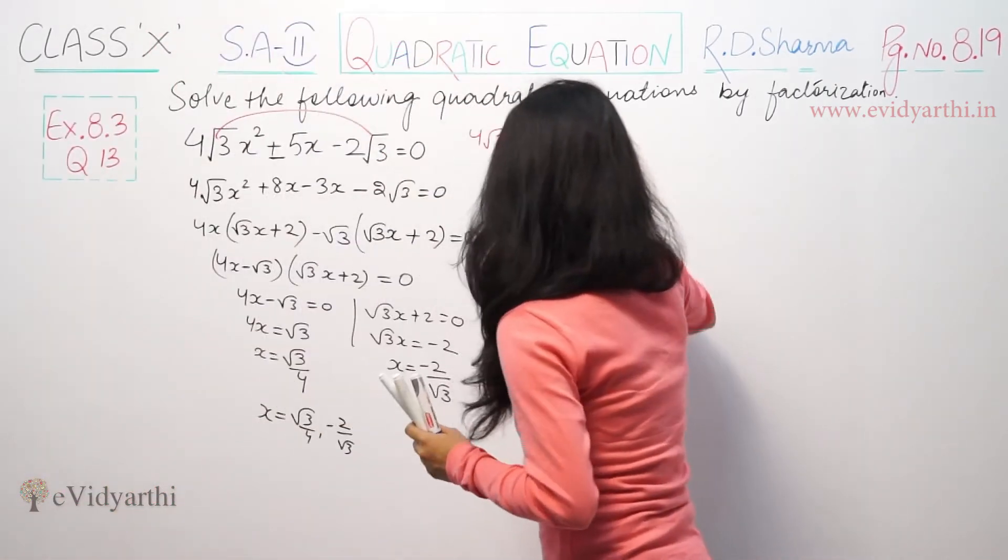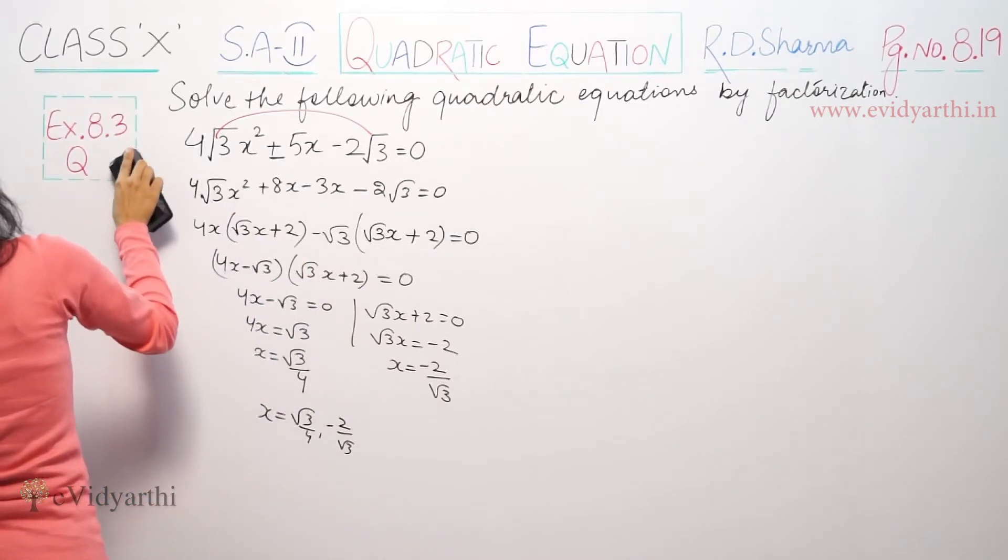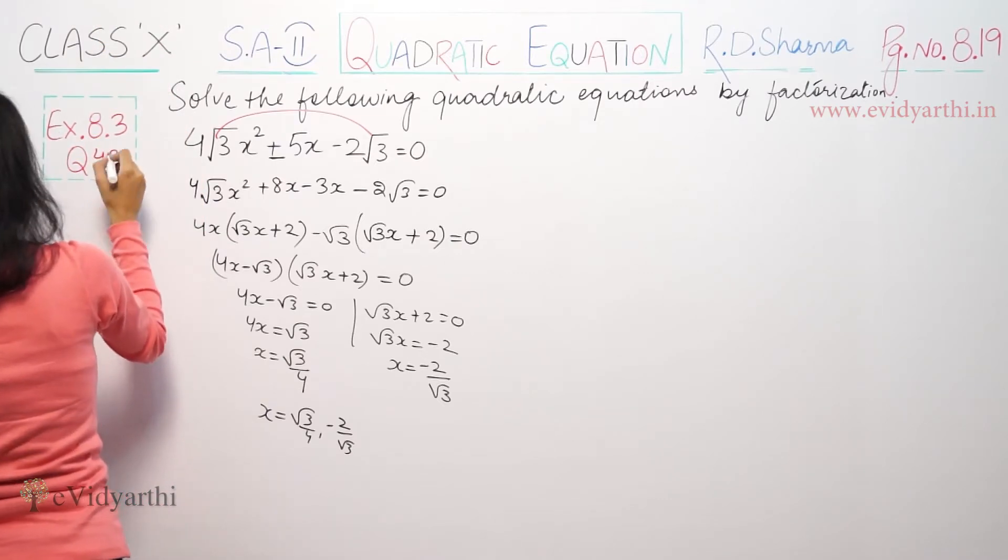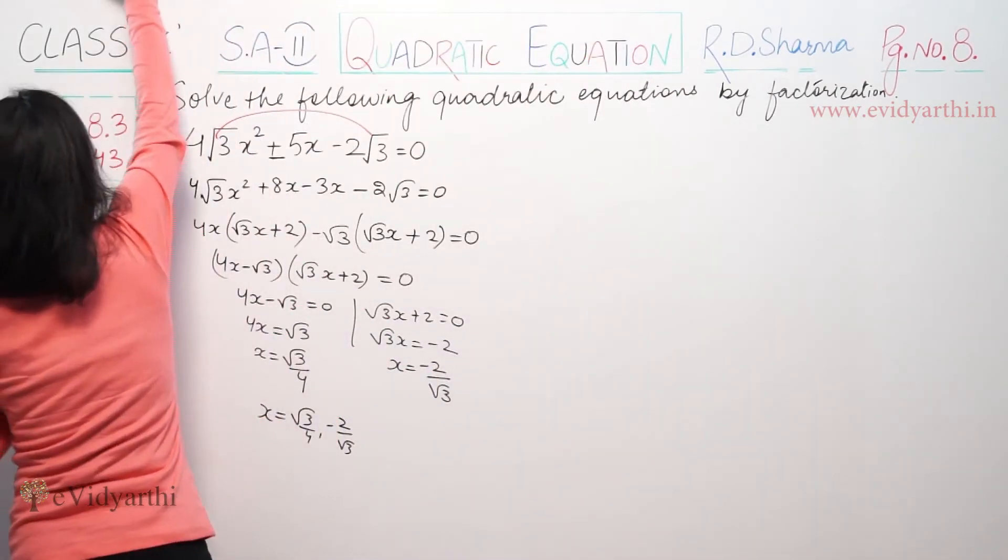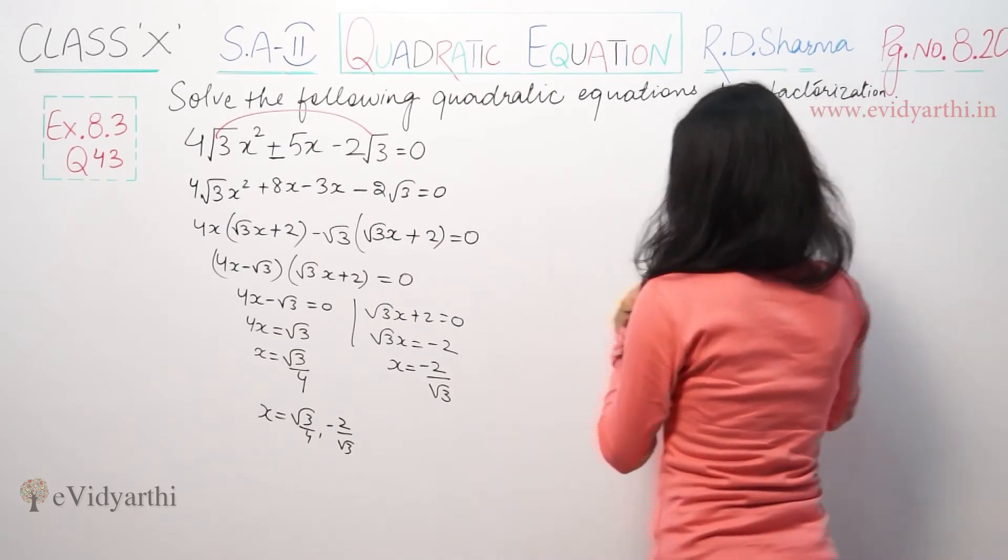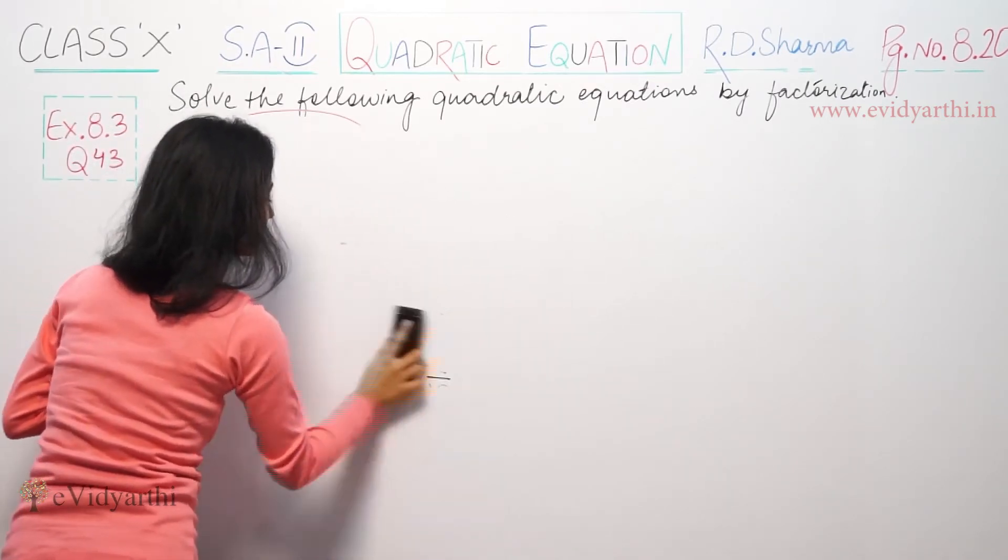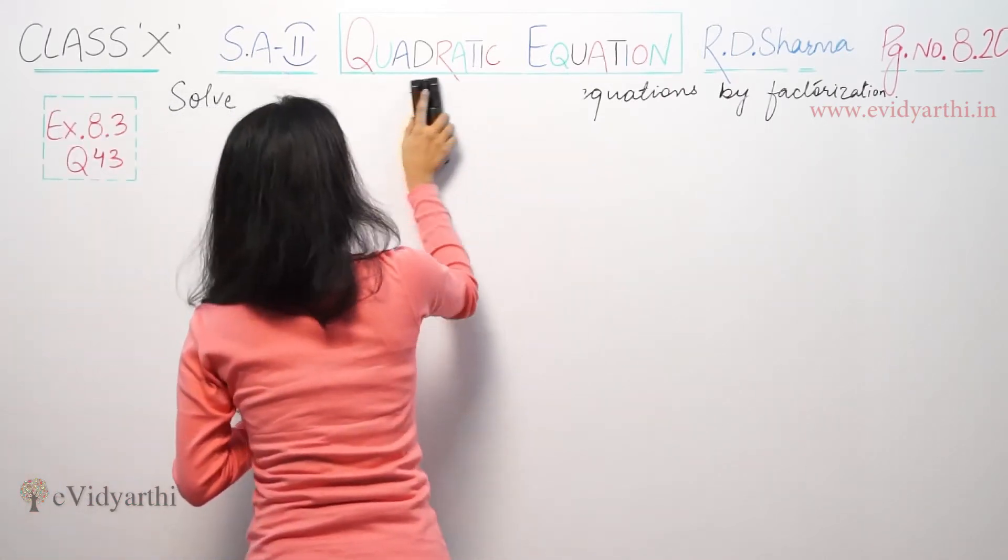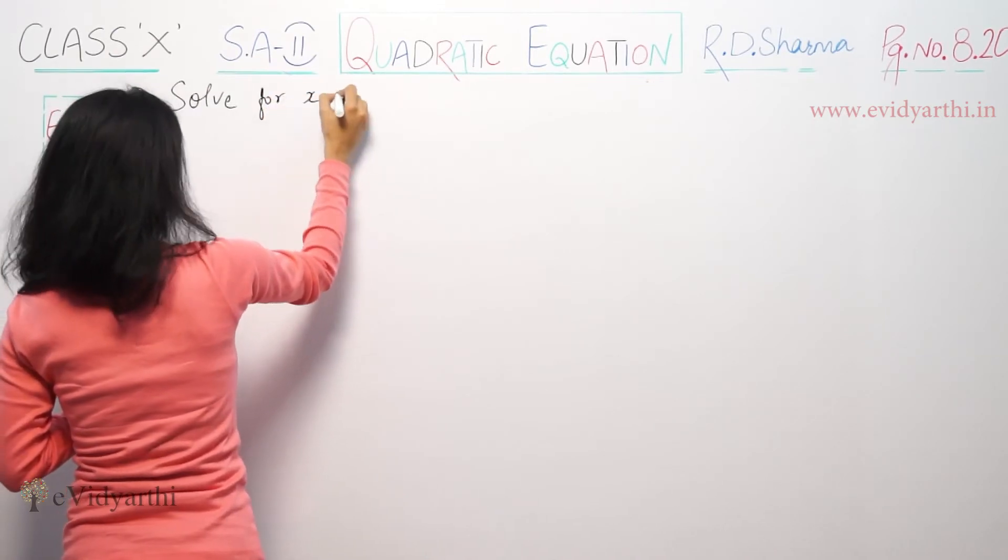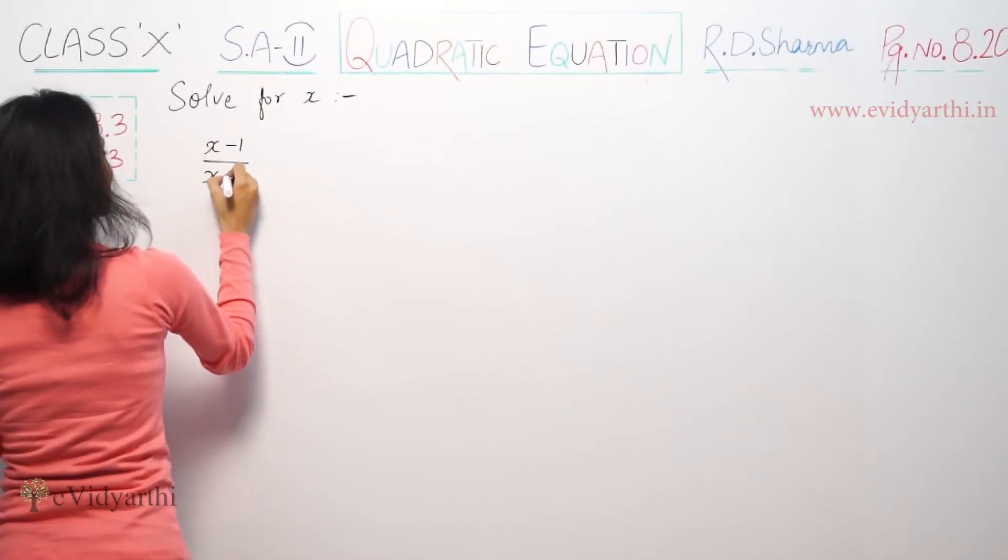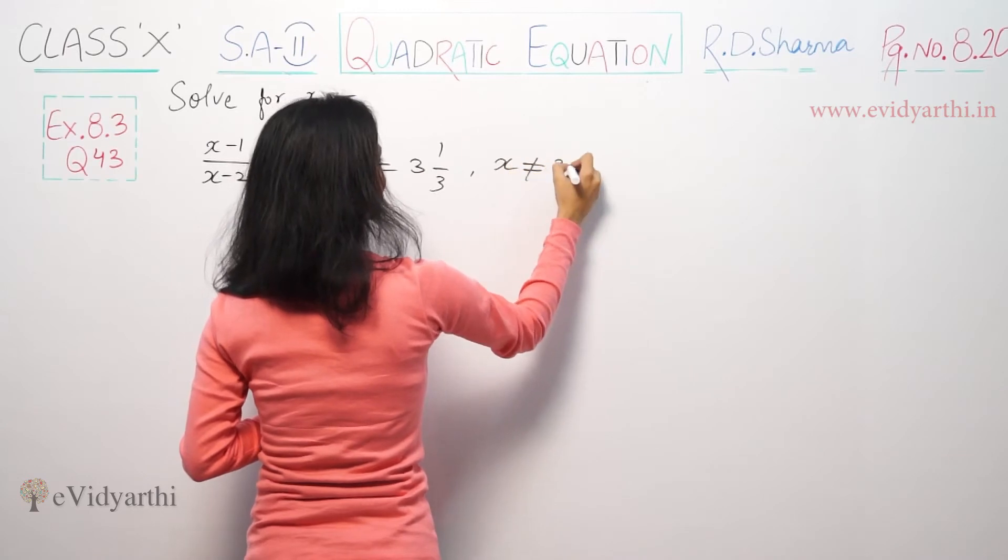So factorization complete. Now let's try another question which is question number 43, page number 8.20. This case solve for x. So we have to find x ka value. So we have given (x-1)/(x-2) + (x-3)/(x-4) = 3⅓, where x is not equal to 2 and 4.